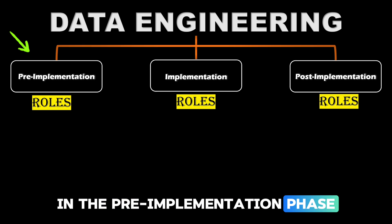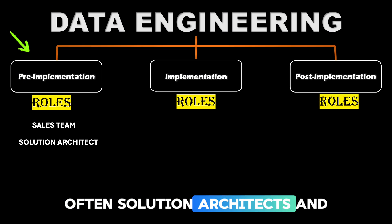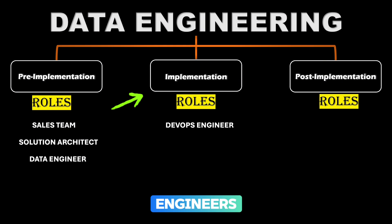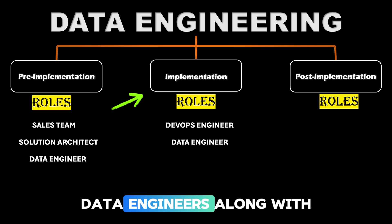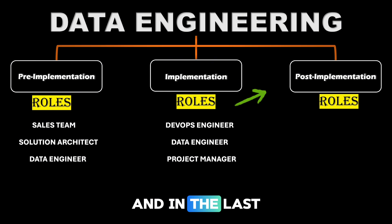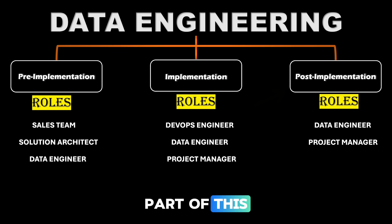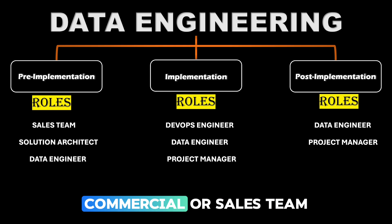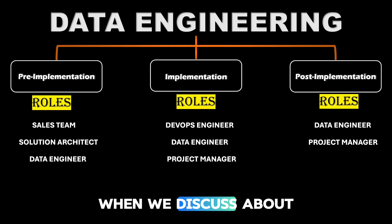In the pre-implementation phase, most of the time someone from the sales or commercial team will be involved, and from the technical side, often solution architects and data engineers will be involved. In the actual implementation phase, someone from the infrastructure team — often called DevOps engineers, infrastructure engineers, or platform engineers — will be involved, along with data engineers and project managers. In the post-implementation phase, mostly data engineers and project managers will be part of this. These roles are applicable for both product-based and service-based companies, though the definition of the commercial or sales team differs between them.